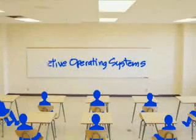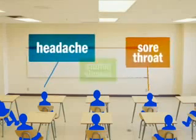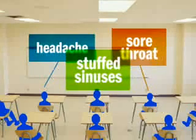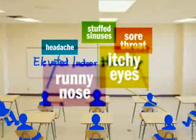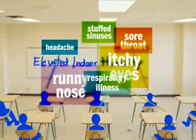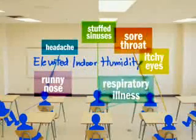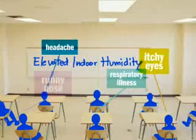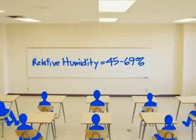Effective operating systems and routine maintenance are the keys to improving indoor air quality in schools. The Florida School study found a link between allergy and related health complaints and elevated indoor humidity. The more humid the environment, the higher the level of health concerns. In rooms with no complaints, no visible mold growth, and no odors, the relative humidity remained between 45 and 69%.